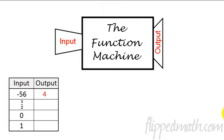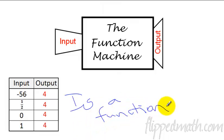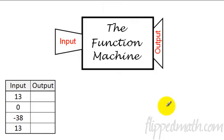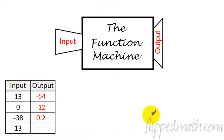Next one: negative 56 comes out a 4, we plug in one half and it also comes out a 4, and 0 comes out a 4, and 1 comes out a 4. They're all the same thing — that's okay. What would matter is if I have a 1 here and a 1 somewhere else that came out something else; then it would not be a function. This one is a function. For the next table, the only thing we need to worry about is the 13 on the top and the bottom. We get a negative 54, a 12, a 0.2. If I plug in that 13, it needs to be a negative 54 — and it is. So this is a function as well.